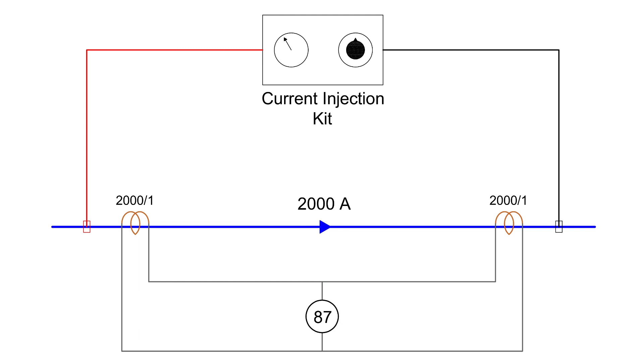To understand stability test, let's consider a circuit with differential protection, also known as protection 87. Under normal conditions, there should be no differential current through the relay.